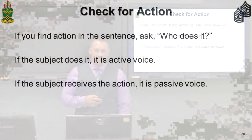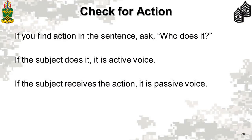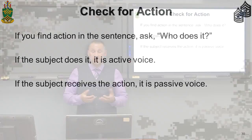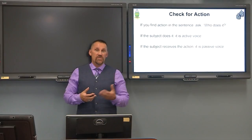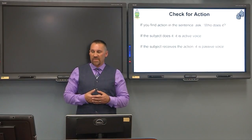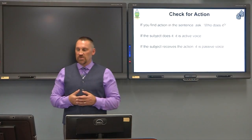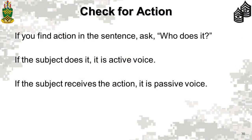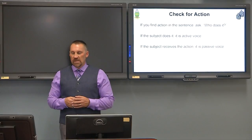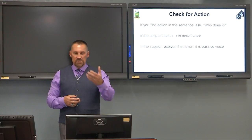One way to check whether active or passive voice is an issue is to look for action in the sentence. If there's no action happening, it cannot be passive voice — there is no voice if there's no action. So ask yourself: if there is action, who's doing it? Who is supposed to do the action? When you answer that question, you will have the subject of your sentence. If the subject is receiving the action, it's passive, and you need to reword the sentence to make it active.